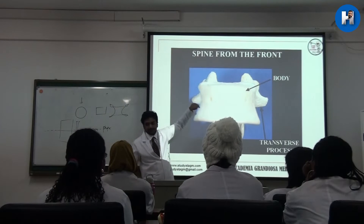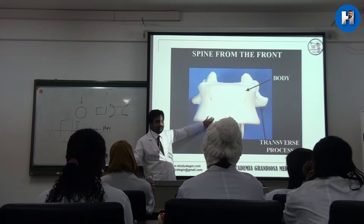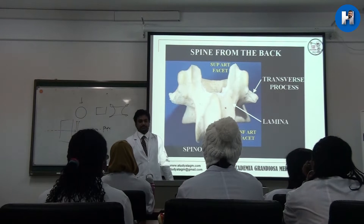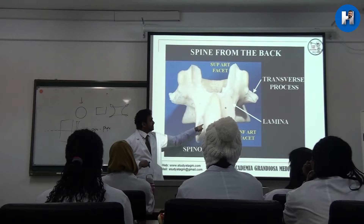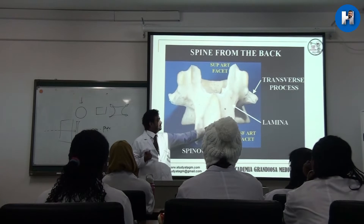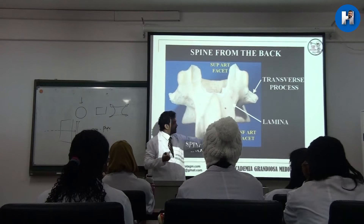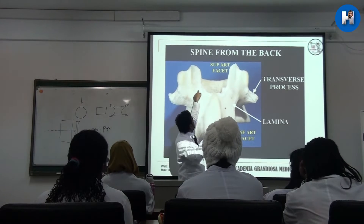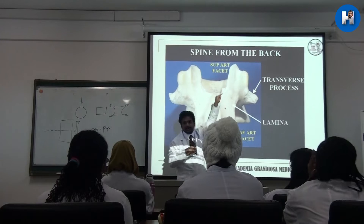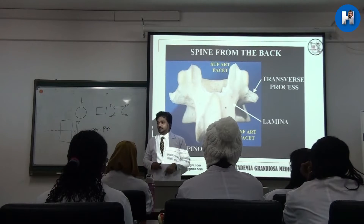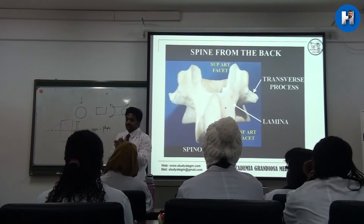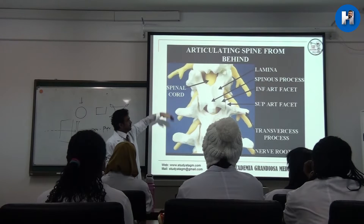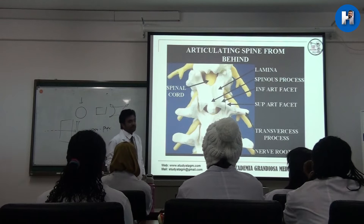So this is going last — the spinous process is going to be the first one. When you take the X-ray, the nearest thing will be spinous process, then lamina, then inferior articulation process, transverse process, superior articulation process, then two round structures which are the pedicles, and after that the body — all overlapping because they are all in one line.